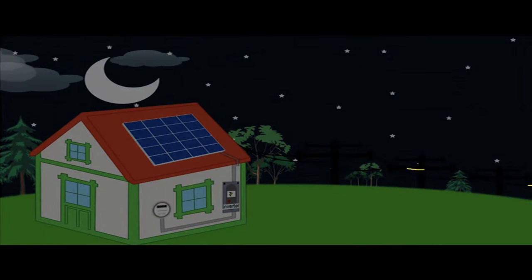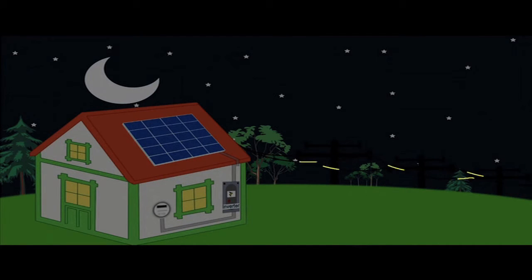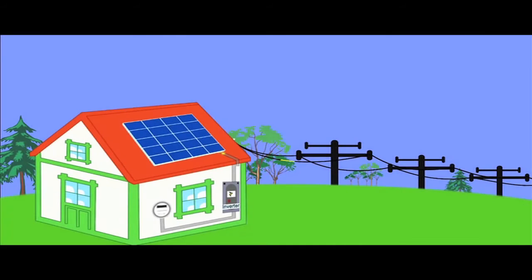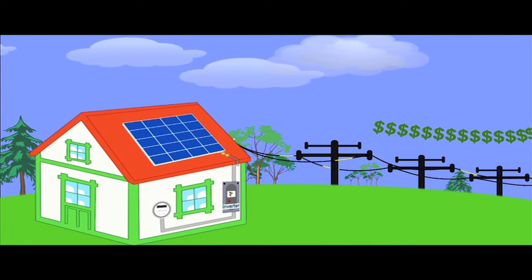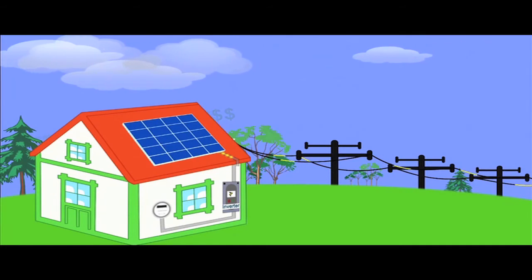Then, at night or on cloudy days when your solar system is not producing enough energy for your home, you will be able to draw power down from the grid, so you never have to worry about running out of electricity. And if you are producing more energy than your household requires, then you'll get a credit from the utility company.